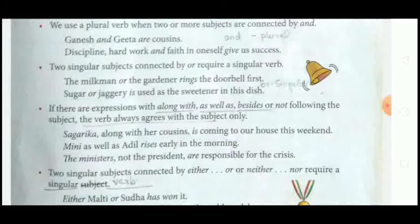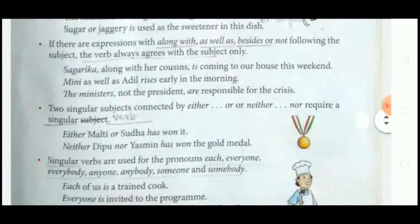'Mini as well as Adil rises early in the morning' — 'Mini' is the main subject which is singular, so 'rises' is singular. Next: 'The ministers, not the president, are responsible for the crisis' — here 'ministers' is the main subject in plural form, so the verb 'are' is in plural form.